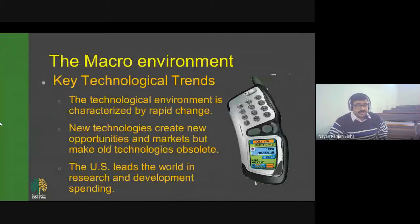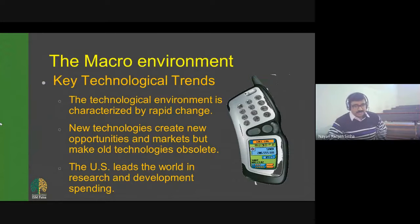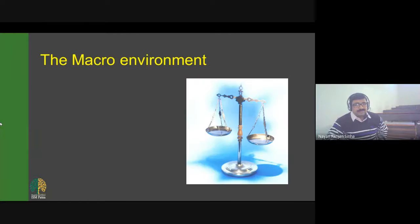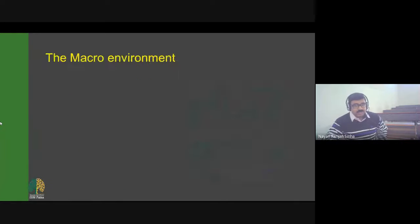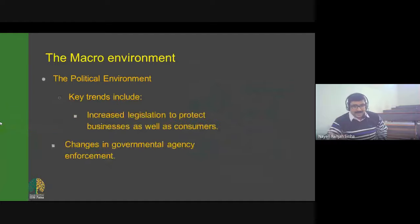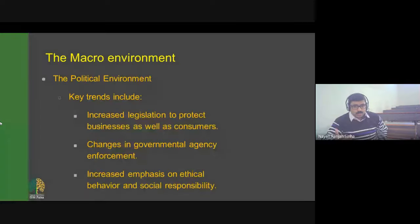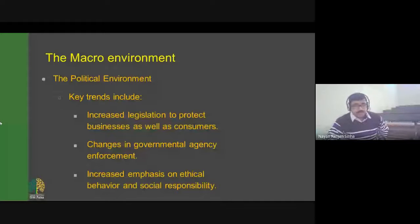The key technological trend is that new technology creates new opportunities for marketers but makes old technology obsolete. The political environment includes laws, governmental agencies, pressure groups, and their impact on organizations and individuals. Trends include increased legislation to protect businesses and consumers, changes in government agency enforcement, and increased emphasis on ethical behavior and social responsibility.